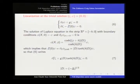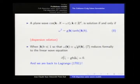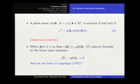What Lagrange did formally was to approximate this non-local operator by a local one — it was before Fourier, so it was not so easy. Now it is easy to expand the symbol in Fourier. When the shallow water parameter kH is small, you get exactly the wave equation as derived by Lagrange. This is the first asymptotic model, valid on a limited time interval. It gives you the velocity of the tsunami, for instance, with good approximation.